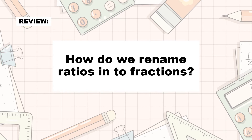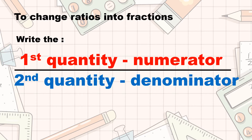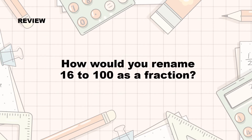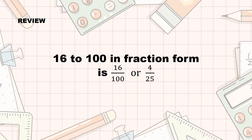Before that, I want to know if you still remember our previous lessons by answering the following questions. The first question is, how do we rename ratios into fractions? To change ratios into fractions, write the first quantity as the numerator and the second quantity as the denominator, then express in lowest terms. How would you rename 16 to 100 as a fraction? 16 to 100 in fraction form is 16 hundredths, or 4 over 25 in lowest terms.